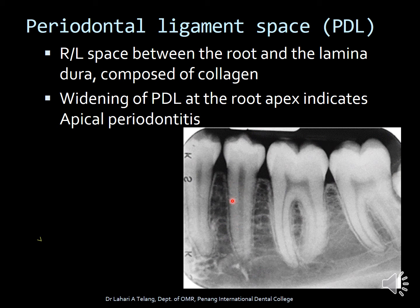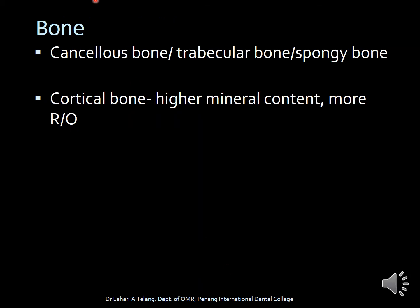PDL also has significant diagnostic importance. The widening of the PDL at the apex of the tooth indicates apical periodontitis, and when interpreting radiographs that is something very important to understand. Bone, on the other hand, consists of cancellous bone — also called trabecular or spongy bone — and cortical bone, which has high mineral content, appears denser and more radiopaque.